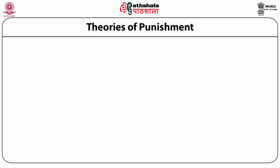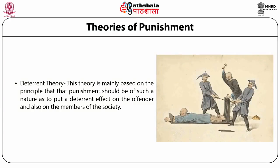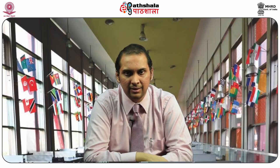So, what is permissible? For that, we have to look at the theories of punishment. One such theory is the deterrence theory, or the deterrent theory. The theory is mainly based on the principle that the punishment should be of such a nature as to put a deterrent effect on the offender and also on members of the society. The Nirbhaya case is a classic example — it is a horrid crime and all of them have now been given the death sentence. The deterrent theory asks: what is the message the state wants to send out? It says, don't do this. Look how we've punished him — we've hanged him. Does that really work in practice? Not really.